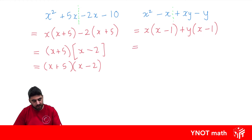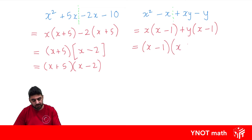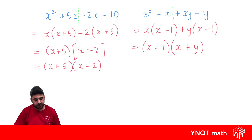So let's pull x minus 1 out as a common factor. In the first term we're just left with x, and in the second term we're left with y. So pulling out x minus 1, we're left with x from the first term and y from the second term.